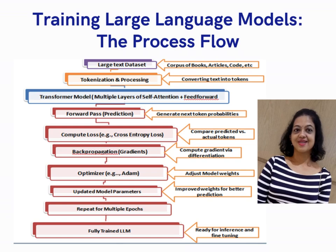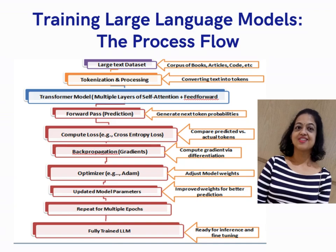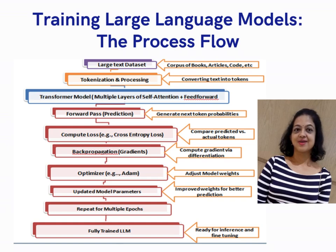Step 5 — Compute Loss (Cross-Entropy Loss): the predicted tokens are compared to the actual tokens from the dataset, and the loss (error) is calculated using cross-entropy to quantify how far the model's predictions are from the actual values. Step 6 — Backpropagation (Gradients): gradients of the loss function with respect to the model parameters are computed using automatic differentiation to identify how each parameter should be adjusted to minimize error. Step 7 — Optimizer (Adam): the optimizer updates the model's weights using the computed gradients to minimize the loss over time.